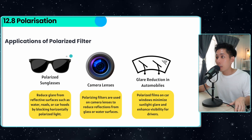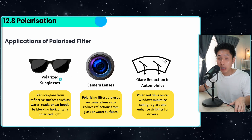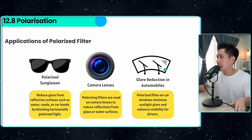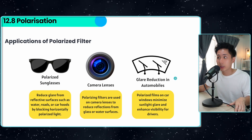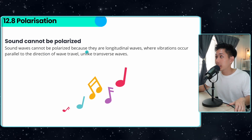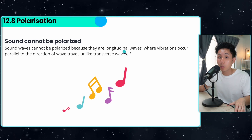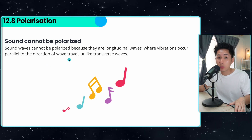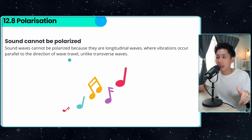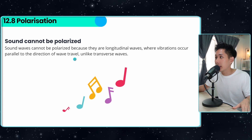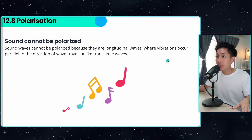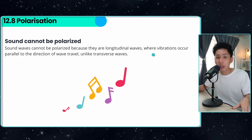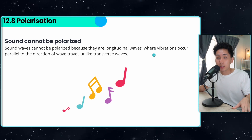Some applications of polarized filters include polarized sunglasses, which block certain light, camera lenses, and glare reduction in automobiles. Sound waves cannot be polarized because they are longitudinal waves — their vibration is parallel to the direction of wave travel, so there is no up/down or left/right component to restrict. That's why sound cannot be polarized. And with that, I'm going to end this video. Thank you so much for watching. I shall see you again in the next video. Goodbye.